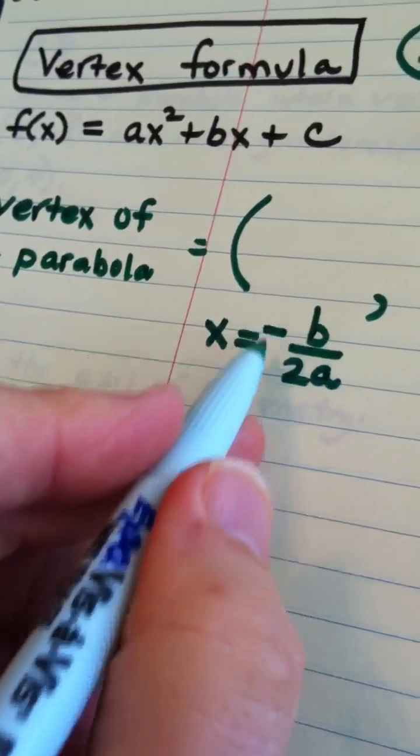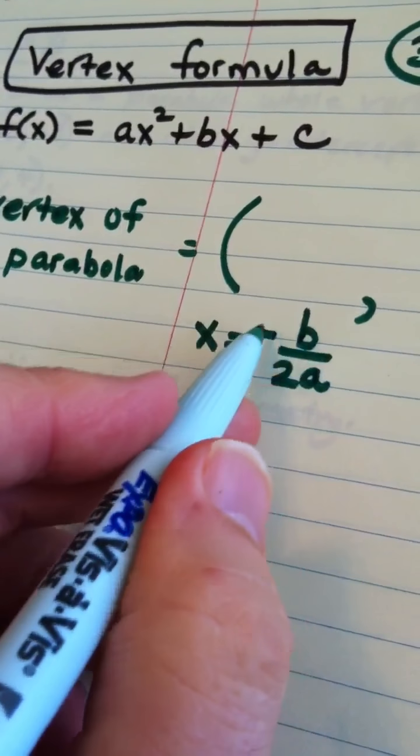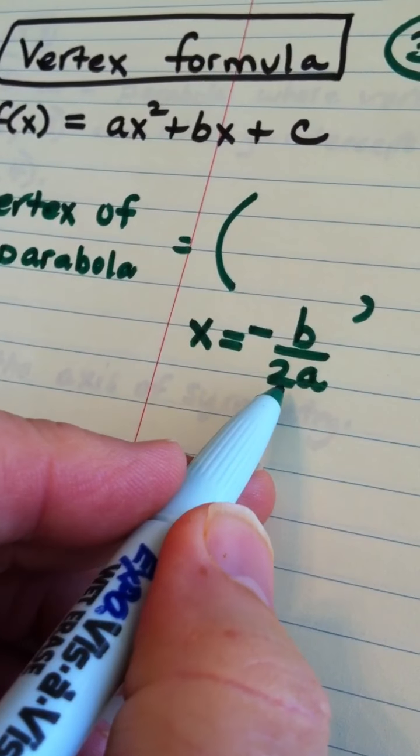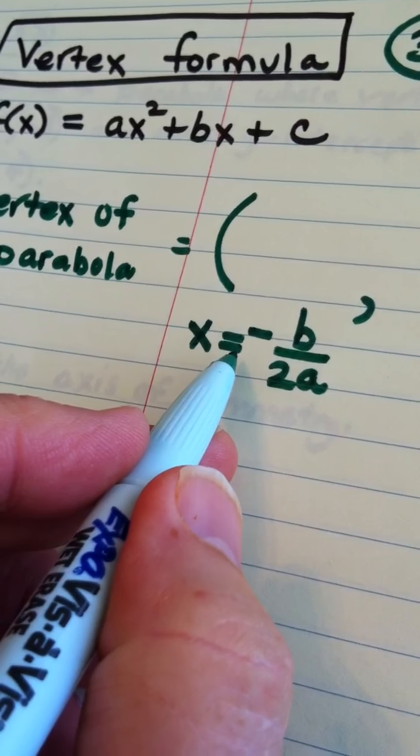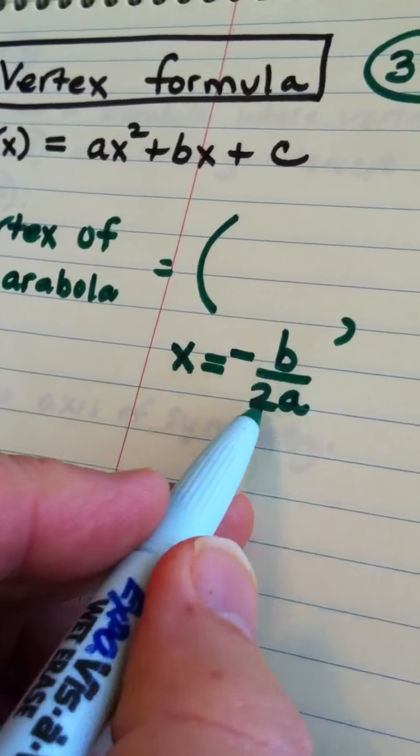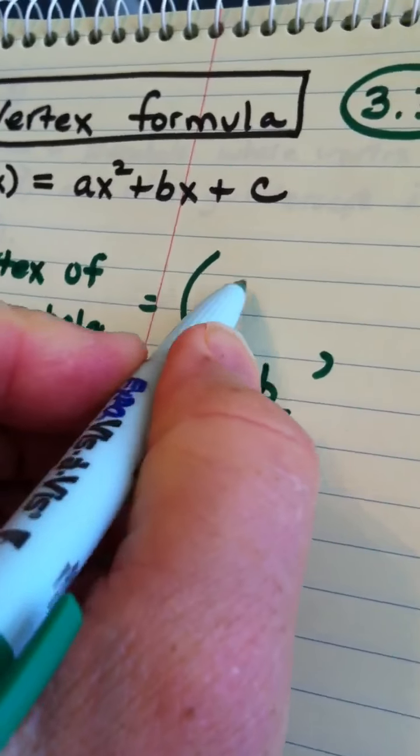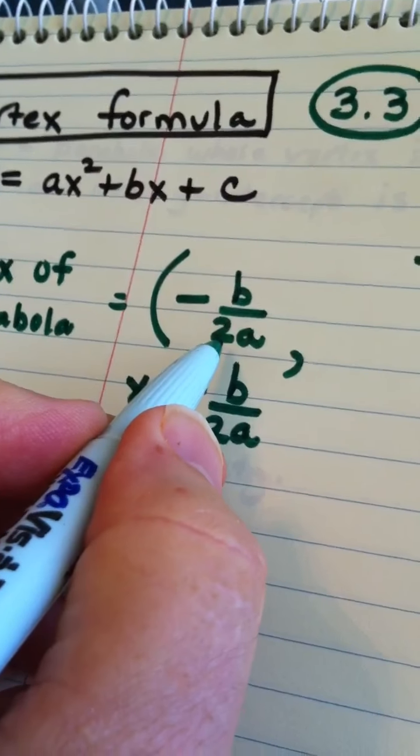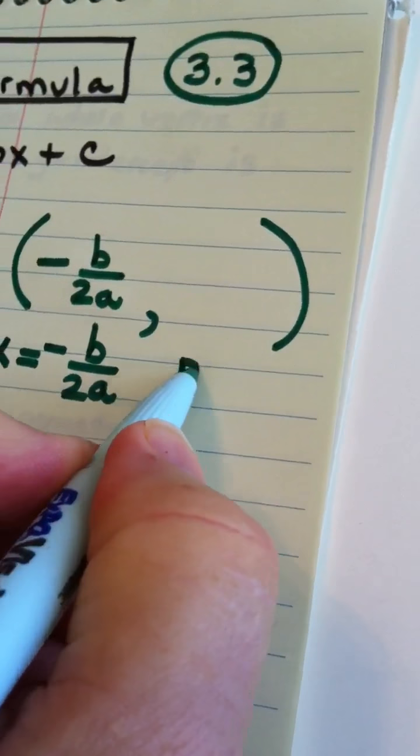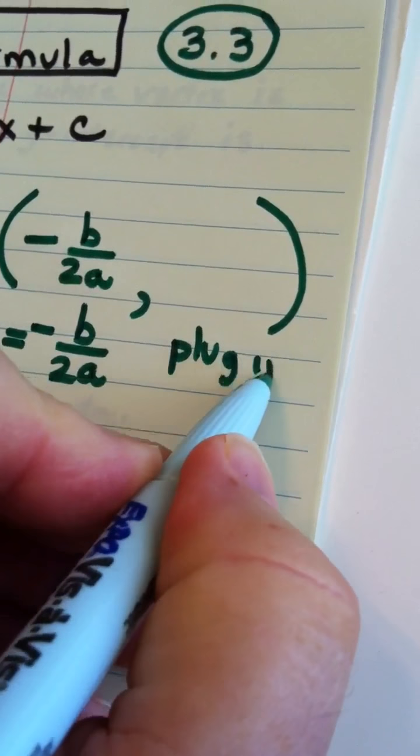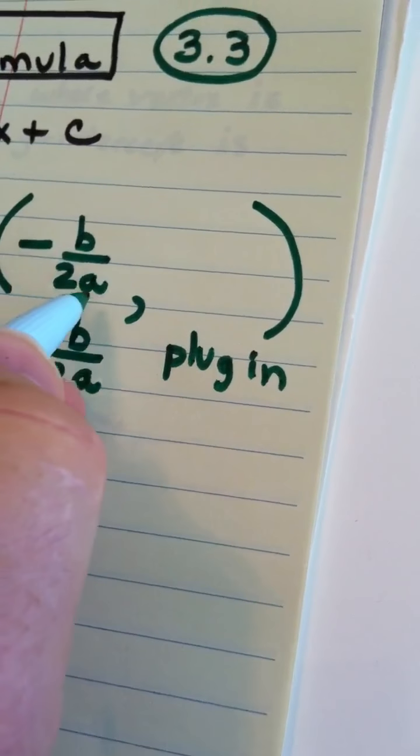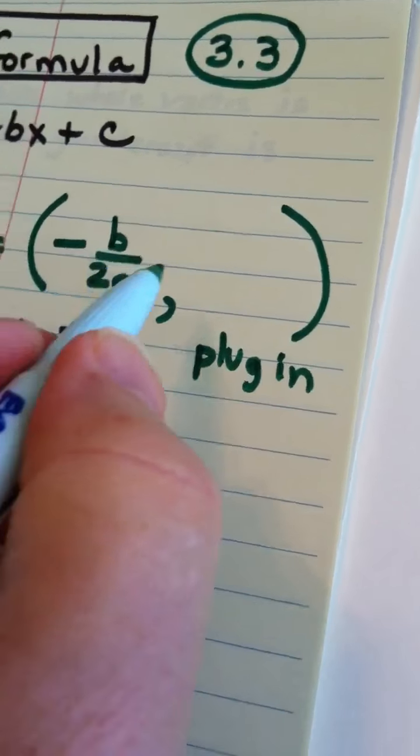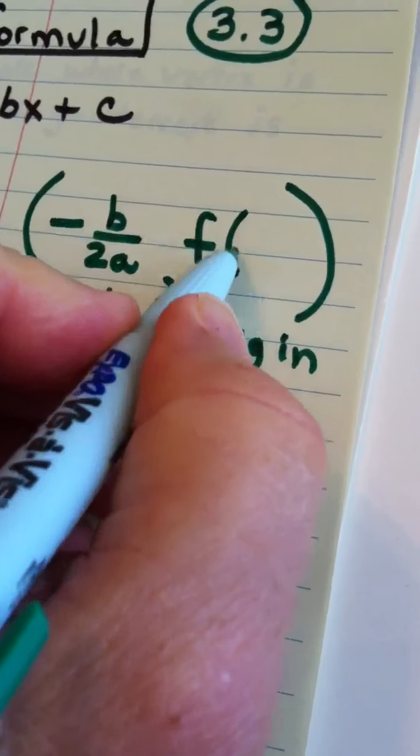So, this is a fact that you need to commit to memory. The x-coordinate of the vertex of a parabola is opposite of b over 2a. Opposite of b over 2a is the x value, and then to get the y value, you plug in. So, you take the answer that you got from here, and you plug it into the function.